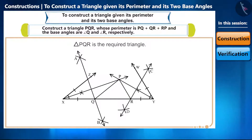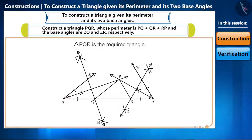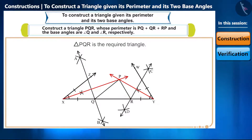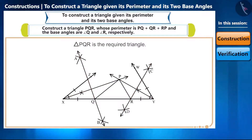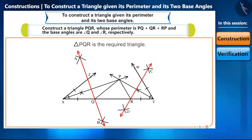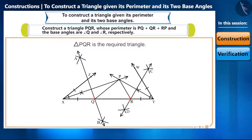To summarize the steps of this construction: by drawing the line segment equal to the perimeter, draw the angle bisectors of the given angles, then construct perpendicular bisectors. We find one vertex of the triangle by the intersection point of the angle bisectors, and the remaining two vertices by the intersection of the base and both perpendicular bisectors.